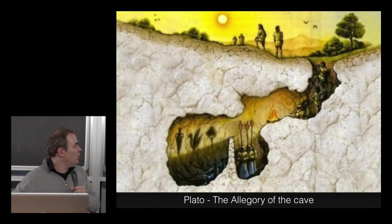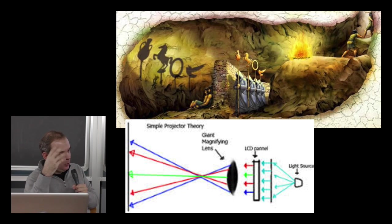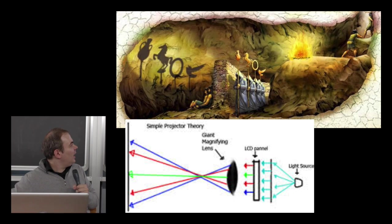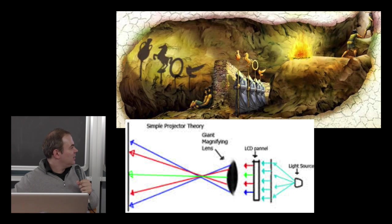Those people down in the cave see only the shadow of a copy of the object. What is really interesting is that what Plato described — a light source, some device that modifies the light, and a screen where something gets projected — is the same architecture as a video projector. This was a really interesting discovery: the video projector and the allegory of the cave have the same structure.